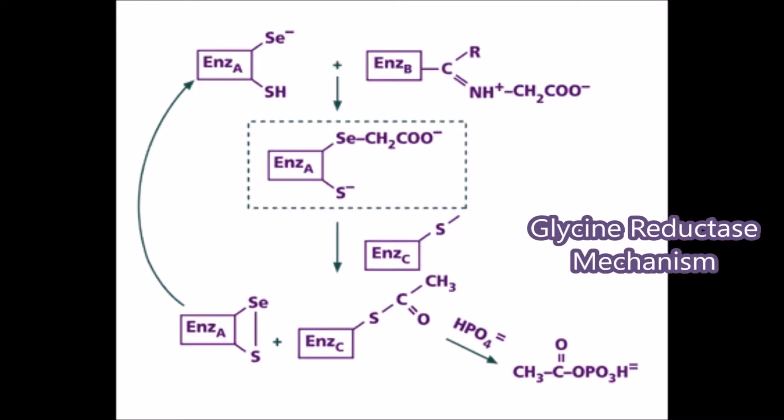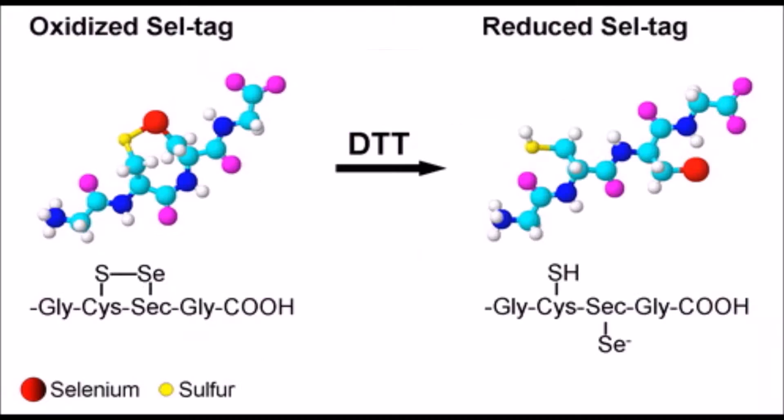Her technician, Joe Nathan Davis, then conducted a separate experiment growing the bacteria with a radio-labeled tag for selenium in order to track its use and configuration in protein A. From the results of this experiment, Dr. Statman was then able to propose that the selenium was incorporated into protein A in the form of a cysteine analog which contained selenium instead of sulfur.